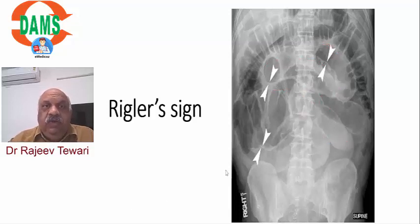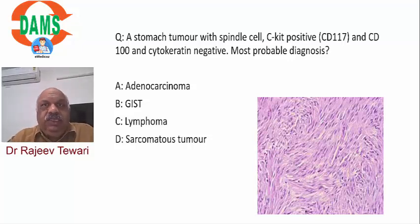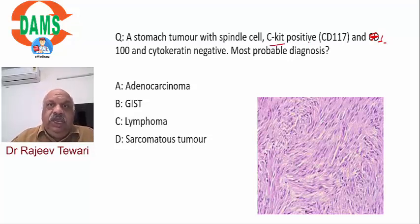Question three: a stomach tumor with spindle cells, CK positive, CD117 positive, and S100 negative. The most probable diagnosis is a gastrointestinal stromal tumor (GIST). The salient features to know are: spindle cell, CK positive - the diagnosis is GIST.